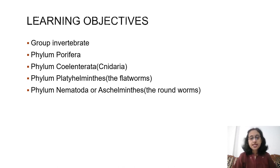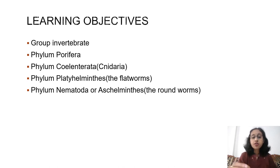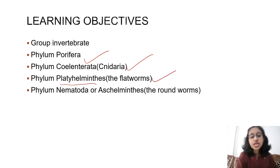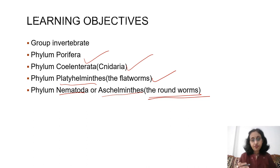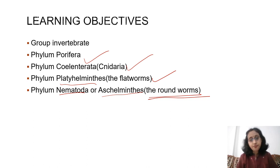The learning objectives of today's lesson: we will discuss the group Invertebrata. Kingdom Animalia is divided into two groups — Invertebrata and Phylum Chordata. Today we are dividing Invertebrata into further phyla: Porifera, Coelenterata (commonly called Cnidaria), Platyhelminthes (flatworms), and Nematoda (roundworms). The next four phyla — Annelida, Arthropoda, Mollusca, and Echinodermata — will be covered in the next video, so subscribe and stay tuned.